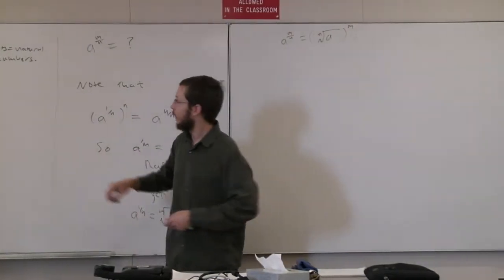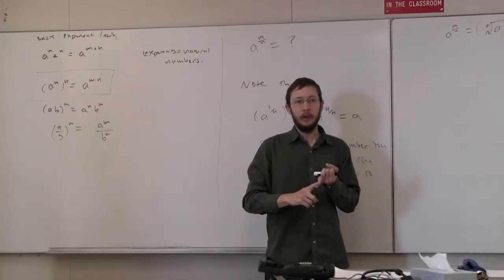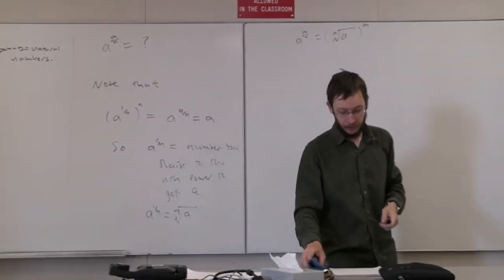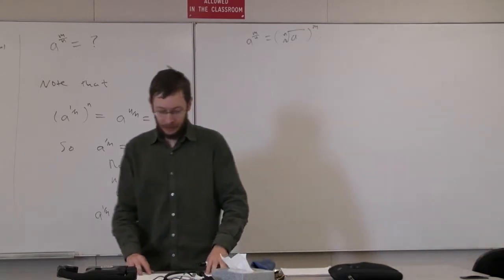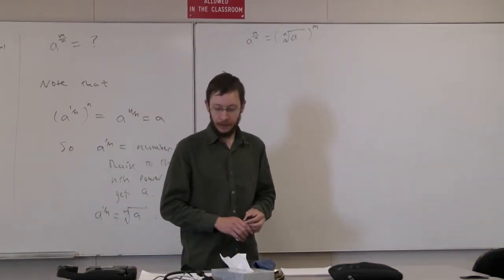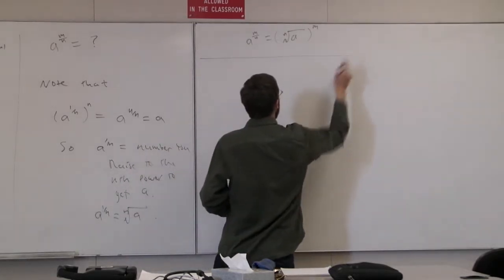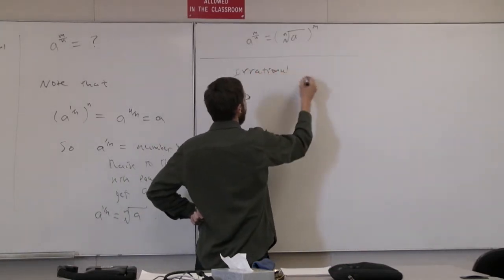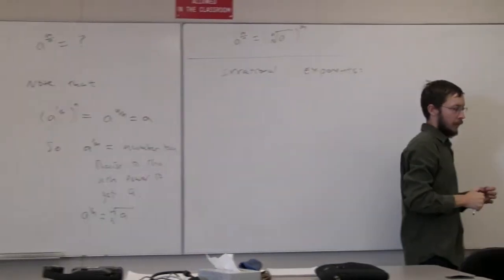In just about ten minutes, we extended these basic exponent laws and made sense of what they mean in the context of zero, negative integers, and rational exponents. But once you get to something like an irrational exponent, things start to get more interesting. For irrational ones, we actually need calculus to define the problem.